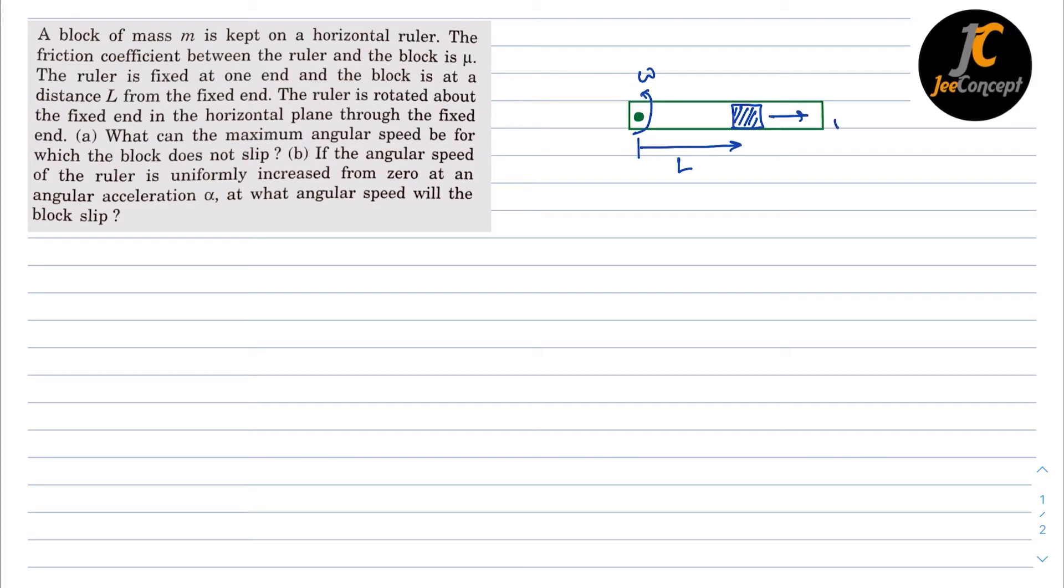So for the first scenario, m l omega square will act outward direction, the frictional force will act in the left hand side direction. In this case, frictional force is mu into n and n is m times g.